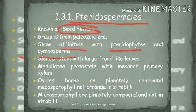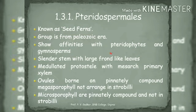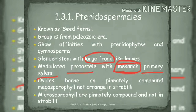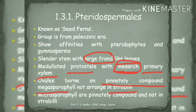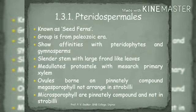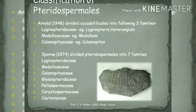Pteridosperms show similarities with pteridophytes and gymnosperms. They have a slender stem with large frond-like leaves. They are medullated with a protostele having meso-arch primary xylem, meaning xylem is formed first and then other vascular tissues. Ovules are borne on pinnately compound leaves, and megasporophylls are not arranged in strobili like a gymnosperm.